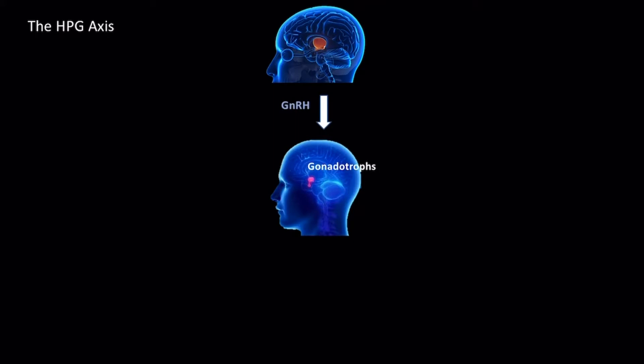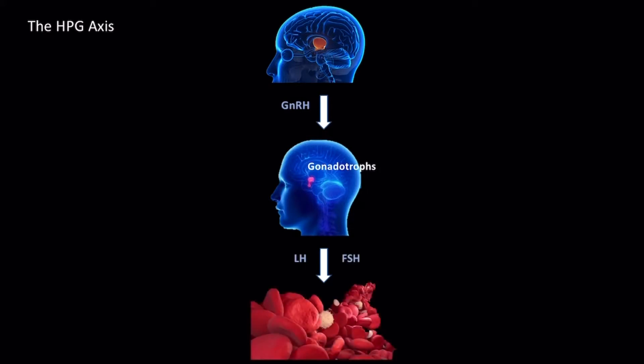Gonadotrophs then release luteinizing hormone or LH and follicle stimulating hormone or FSH.